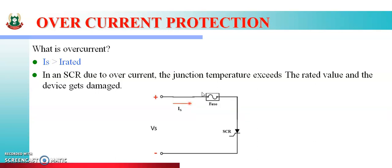To overcome this problem, we connect a fuse in series with the SCR. What will the fuse do? It will sense the supply current coming from here. If the supply current is greater than the SCR's rated value, this fuse will trip or blow. Then it won't allow current to pass to the SCR, so the SCR is protected from overcurrent. Therefore, remember that for overcurrent protection, we use the fuse in series with the SCR.